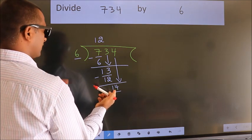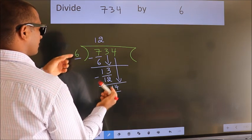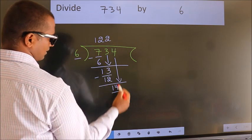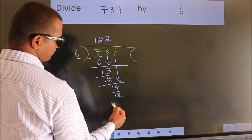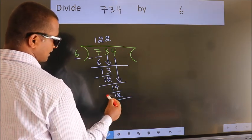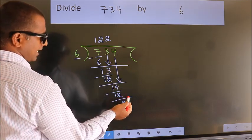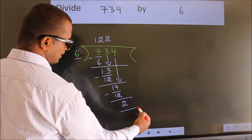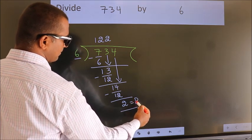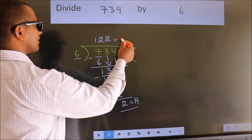A number close to 14 in the 6 table is 6 twos 12. Now we subtract. We get 2. No more numbers to bring down, so we stop here. This is our remainder. This is our quotient.